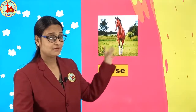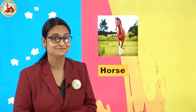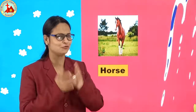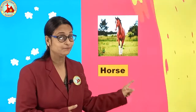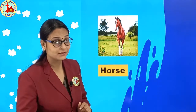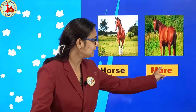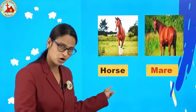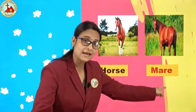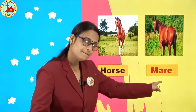Which animal is this? I will not tell you — you see the picture and give me the answer. Horse! Very good children, you all are very clever. H-O-R-S-E. Horse. And what about feminine? M-A-R-E. Horse, mare.